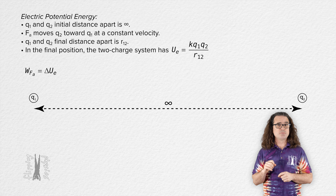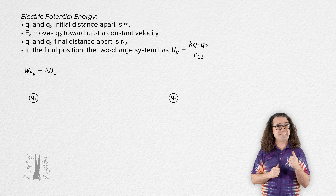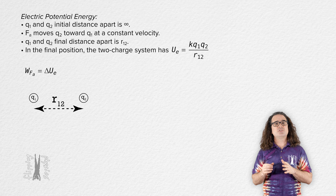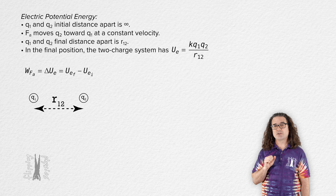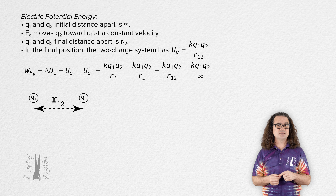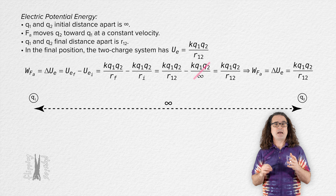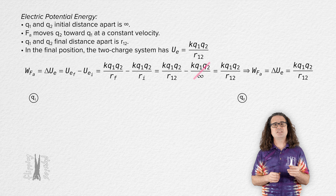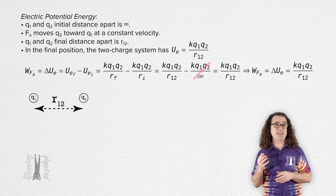The work done by the external force to move charge 2 at a constant velocity from an infinite distance from charge 1 to a final position a distance r₁₂ from charge 1 is equal to the change in electric potential energy of the two-charge system, or electric potential energy final minus electric potential energy initial. We can substitute in the equation for electric potential energy for both initial and final, substituting r₁₂ for the final distance and infinity for the initial distance. The work done equals the electric potential energy of the two-charge system, and this time there is no negative in the equation.